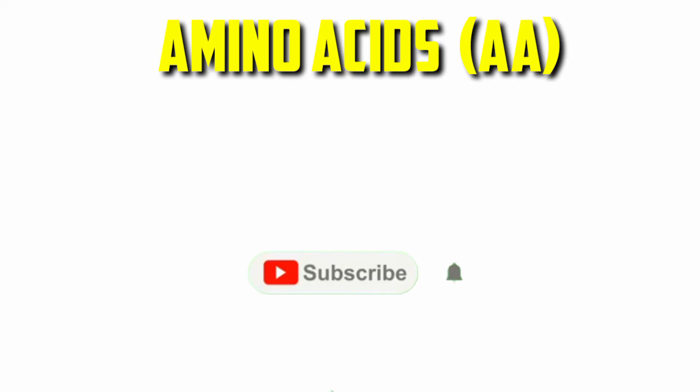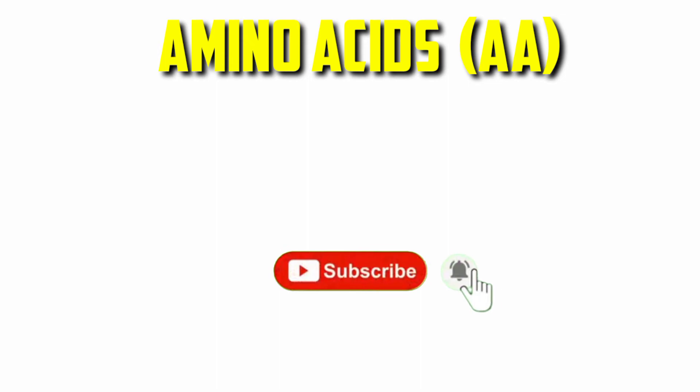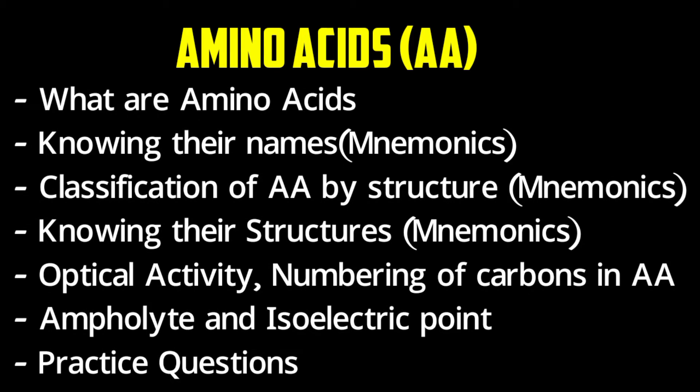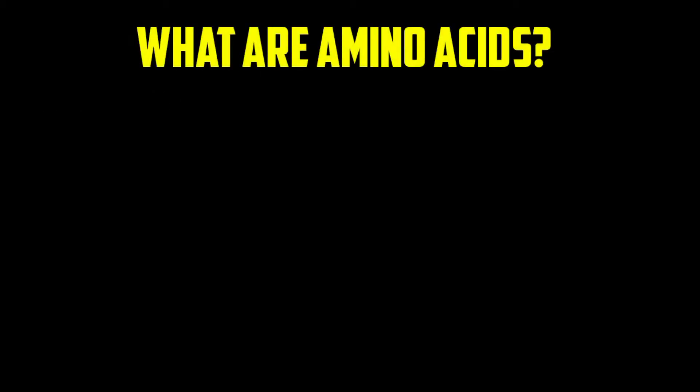Good day everyone, welcome to Science Lay. I want to start a new series on biochemistry, so stay tuned and subscribe. Today we'll talk on amino acids — what amino acids are, their names, classifications, structures, and some terms like optical activity, how to number the carbons in amino acids, ampholytes, and isoelectric points. I'll also give you practice questions.